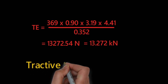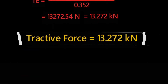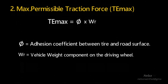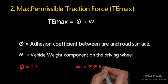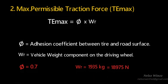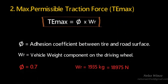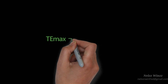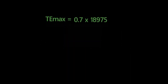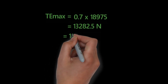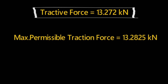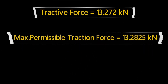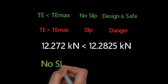This is the tractive force for the Audi A6. Now we have to check whether this design is safe or not, so let's find out the maximum permissible traction force. The adhesion coefficient is 0.7, and WR is 18,975 N. Applying these values in the formula, we get 13.2825 kN as the maximum permissible traction force. Comparing the two values: TE is lesser than TE maximum, so the design is safe.